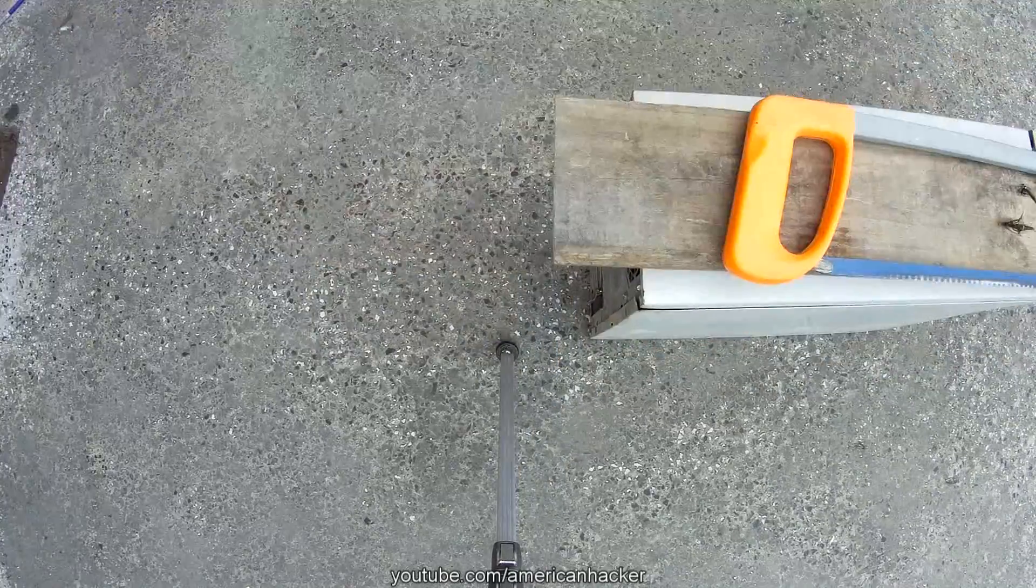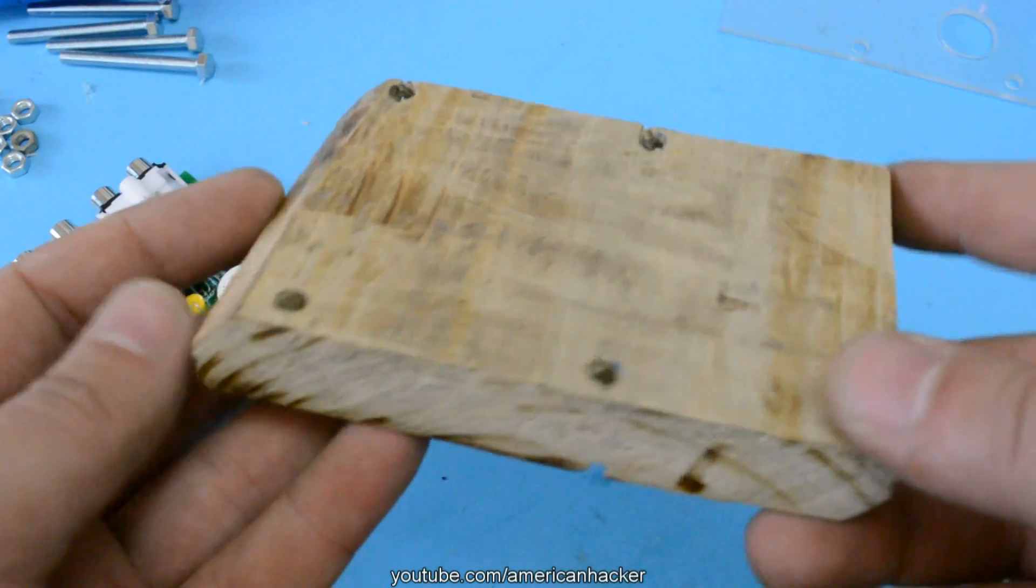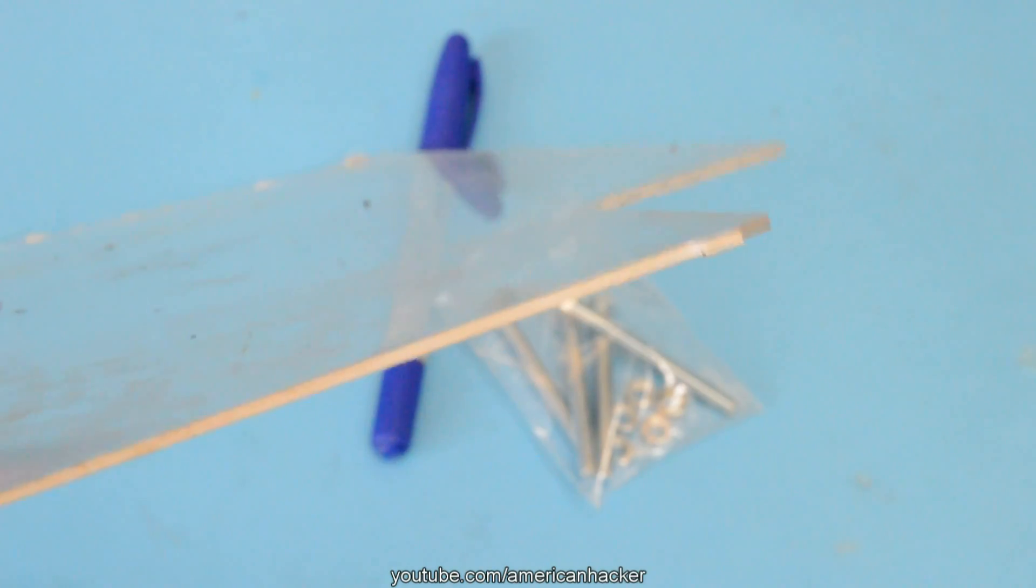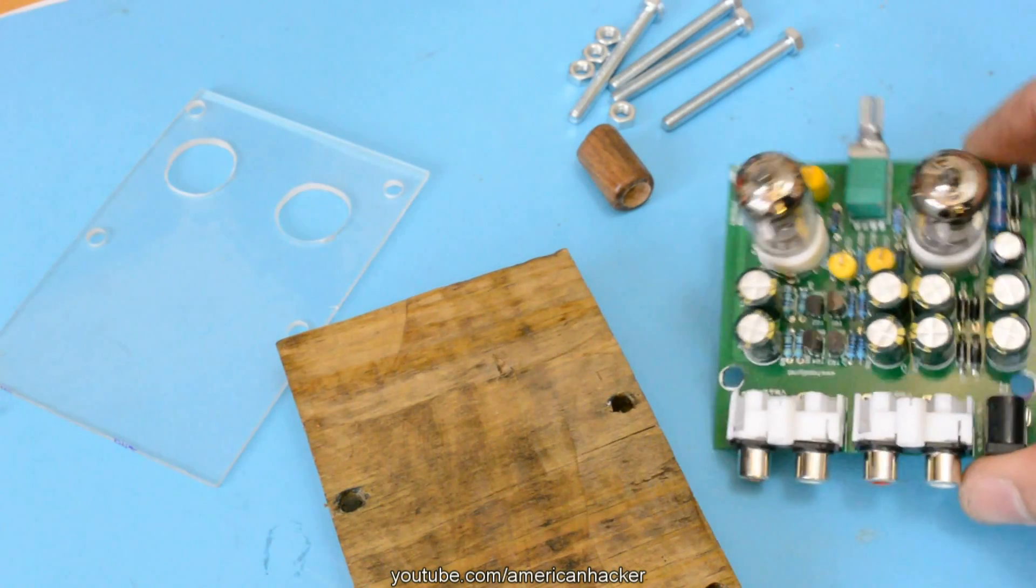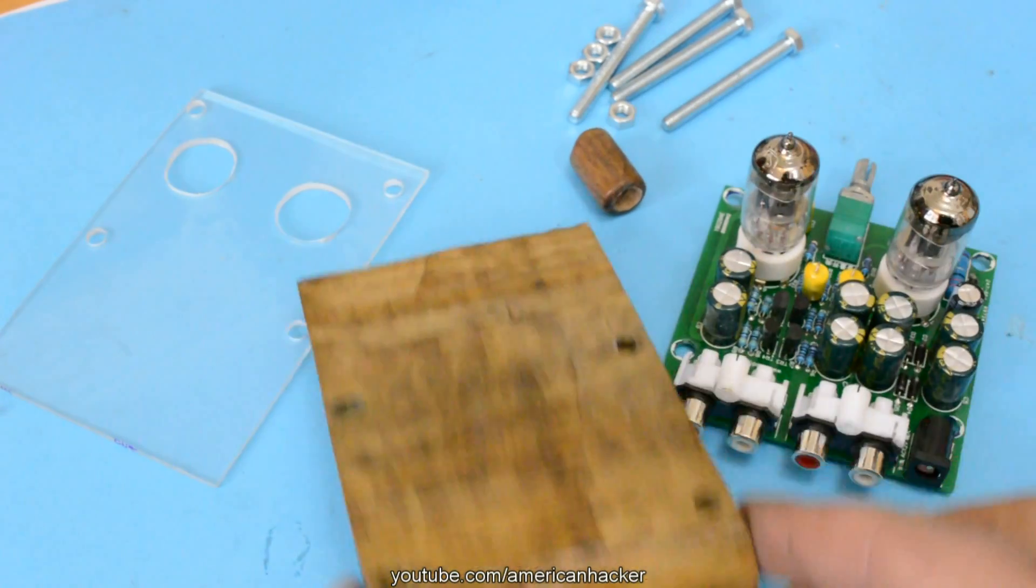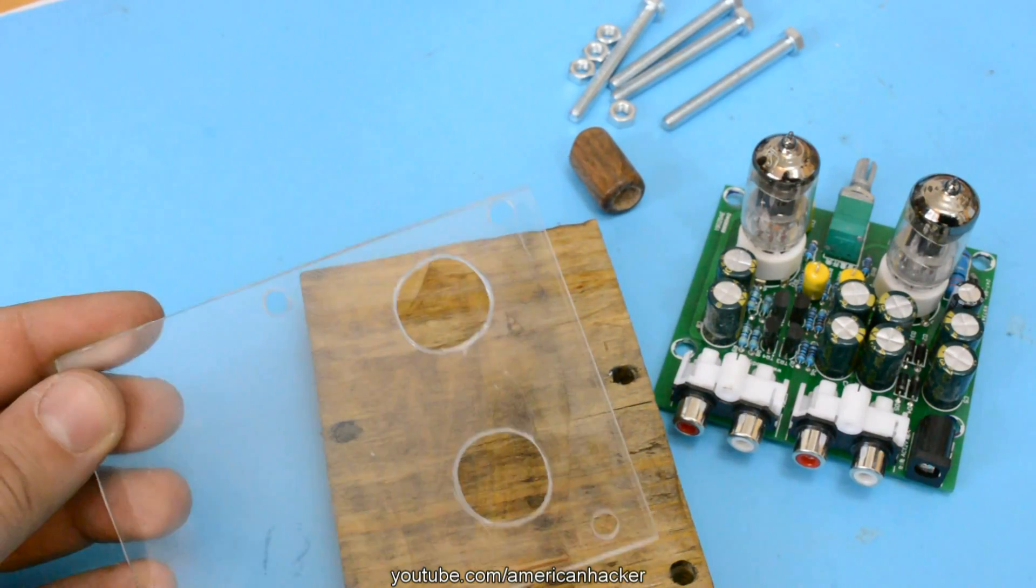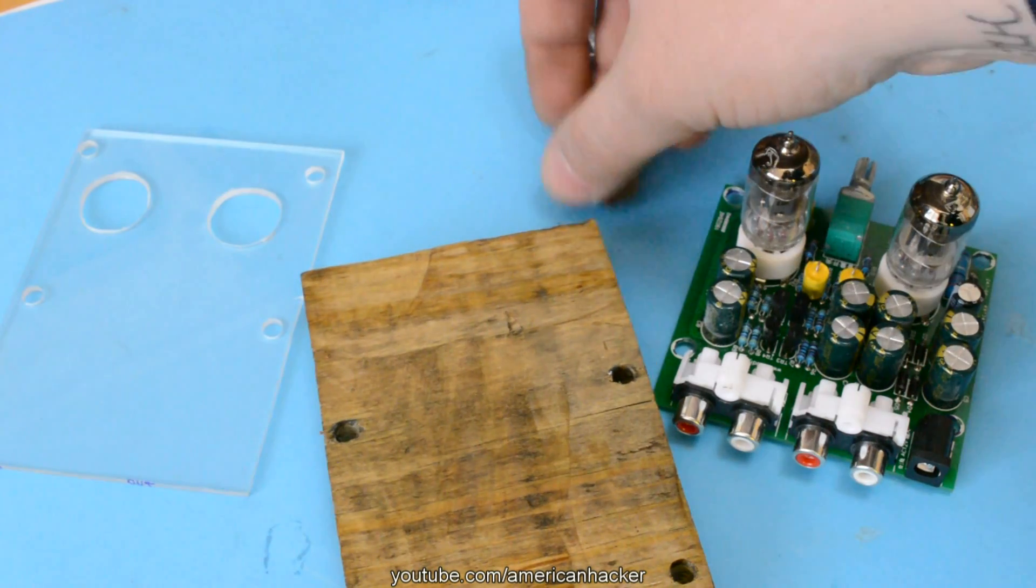Now, we're gonna make a vintage case for this preamplifier. Cutting a wood piece with similar dimensions like PCB and cutting one more piece of plexiglass with two holes for the tubes. Also, I have made a small wooden knob for the volume.